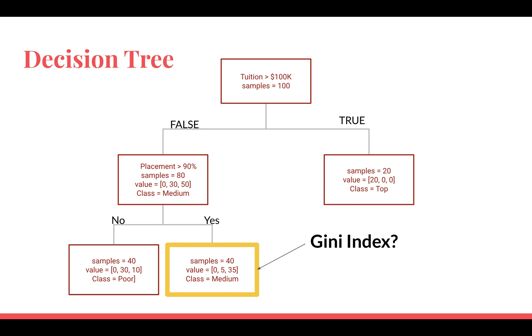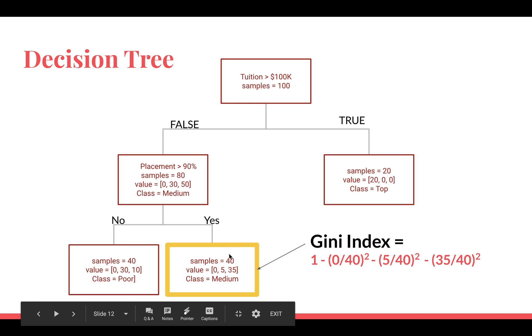Now let's say I want to calculate the Gini Index of this highlighted node. It's very simple and this is the formula for that. I take the total number of samples present in this node which is 40 in this case and put that in the denominator. Then in the numerator I put the number of records belonging to each class: first one is 0, second one is 5, and third one is 35, and then I take the squares of that. Then I subtract all of these from 1. So that's the formula for calculating the Gini Index.